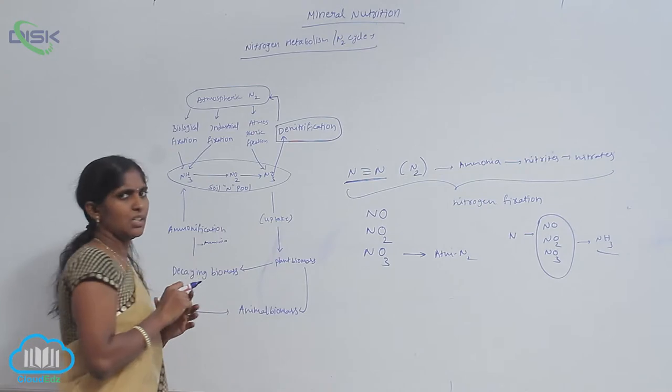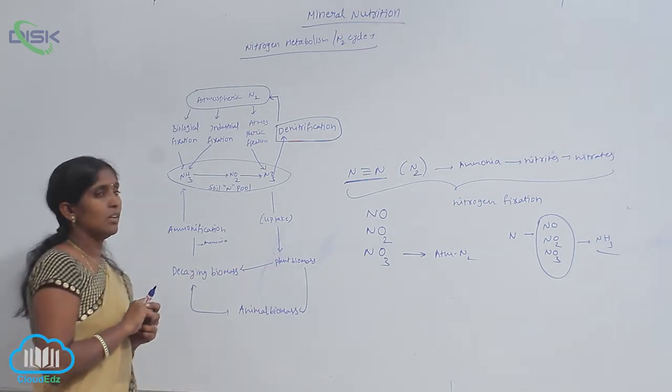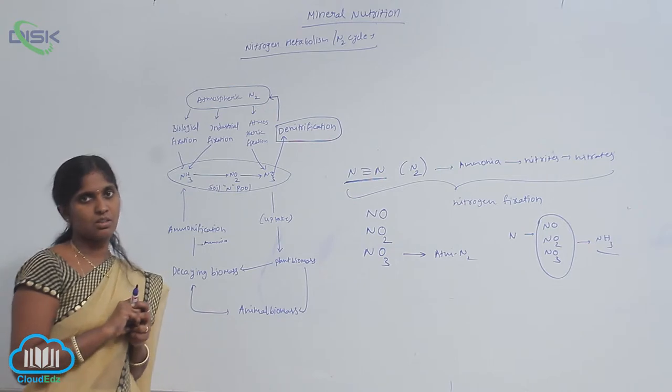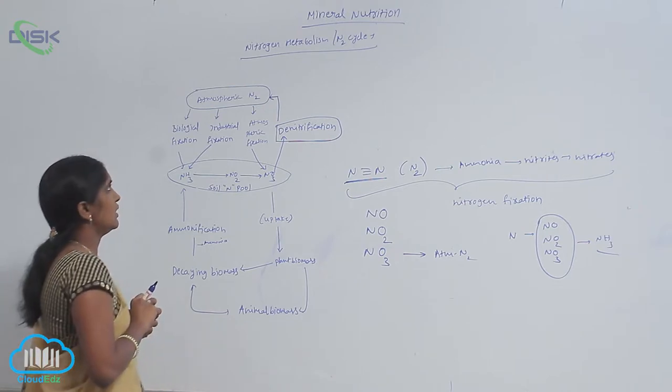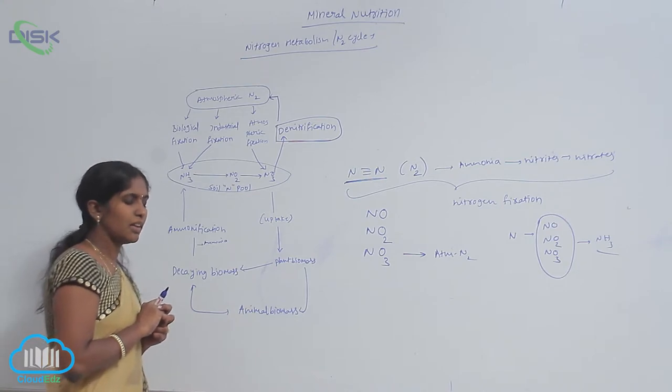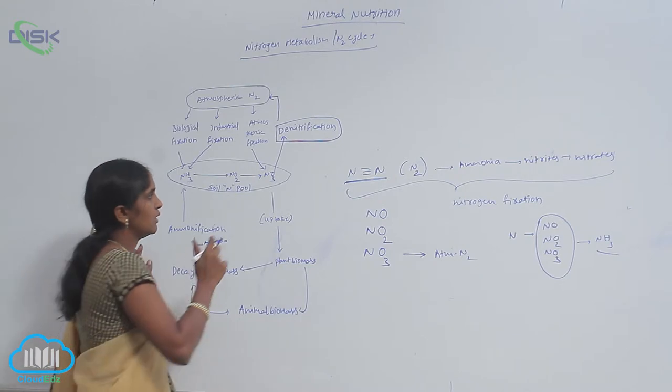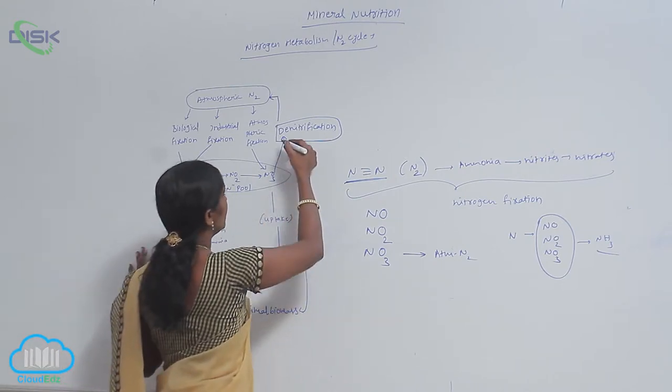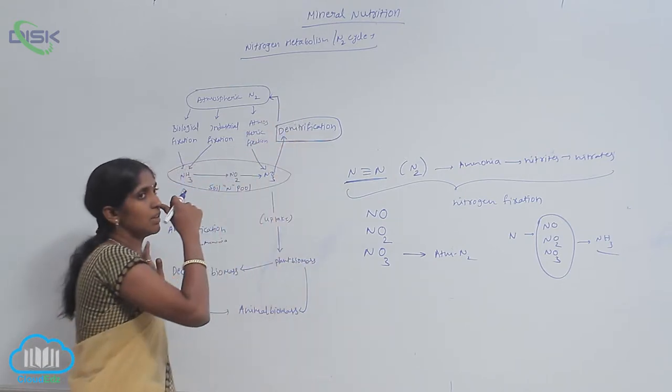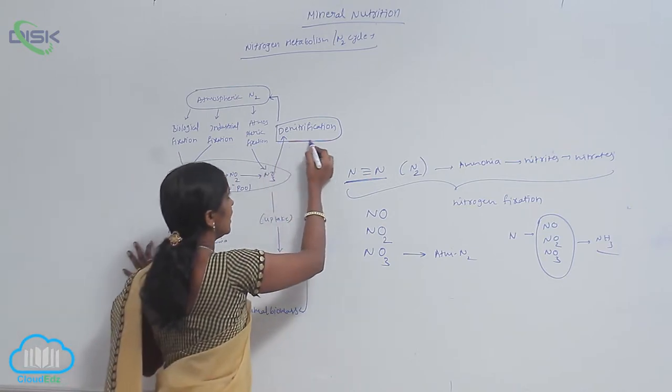What is denitrification? It's the reverse reaction of nitrogen fixation. Basically, nitrates are produced from ammonia. But here the nitrates are converted into atmospheric nitrogen. The process is called denitrification.